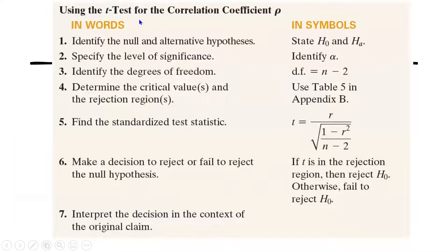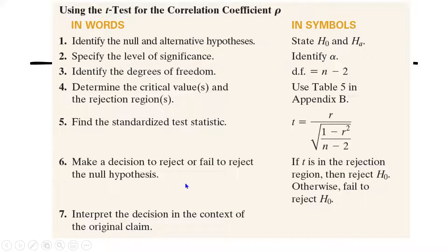Here is how we perform hypothesis testing for the correlation coefficient. First, identify your null and alternative hypothesis. Next, identify the alpha level — the most commonly used are 0.10, 0.05, and 0.01. Then identify the degree of freedom, which is n minus two. Use the t-distribution table to determine the critical values and the rejection region. Then find the standardized test statistic using the equation, and finally make a decision whether to reject or fail to reject the null hypothesis.